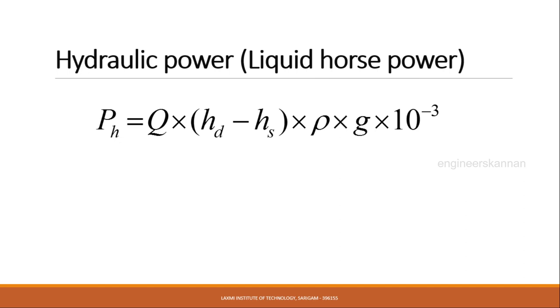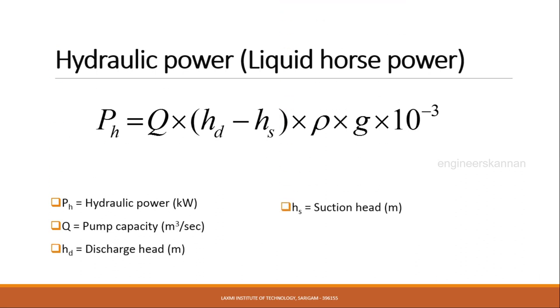P_h equals Q times (h_d minus h_s) times rho times g times 10^-3, where P_h is hydraulic power in kilowatts, Q equals pump capacity, h_d and h_s are the discharge head and suction head in meters, rho equals density of the particular fluid, and g equals acceleration due to gravity.